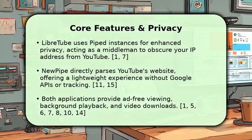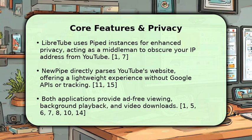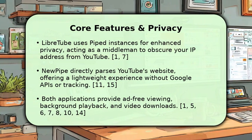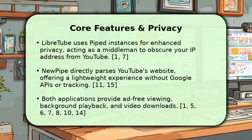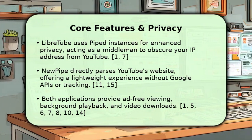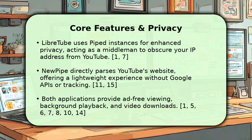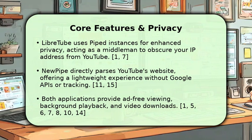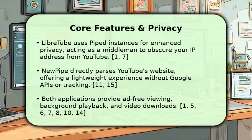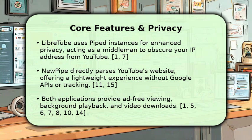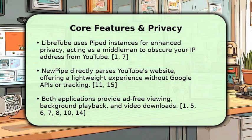When it comes to core features and privacy, both apps excel at blocking ads and trackers. LibraTube distinguishes itself by routing requests through Piped instances, adding an extra layer of anonymity by masking your IP address from YouTube. NewPipe, on the other hand, directly parses the YouTube website, offering a very lightweight option, often around 11 to 12 megabytes in size.